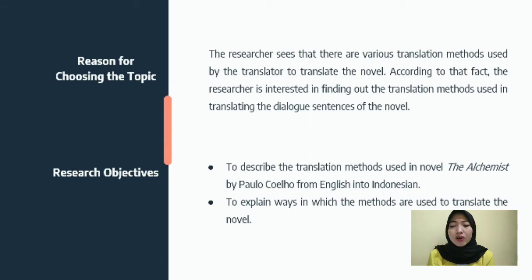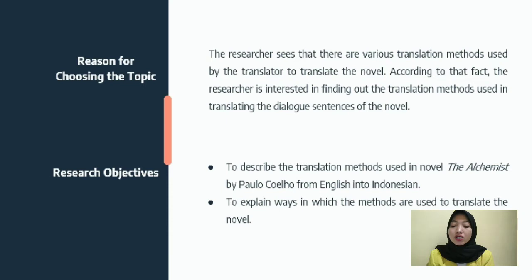The reason for choosing the topic: the researcher sees that there are various translation methods used by the translator to translate the novel and is interested in finding out which methods were used in translating the dialogue sentences. The research objectives are: first, to describe the translation methods used in The Alchemist by Paulo Coelho from English into Indonesian; and second, to explain the ways in which those methods are used.